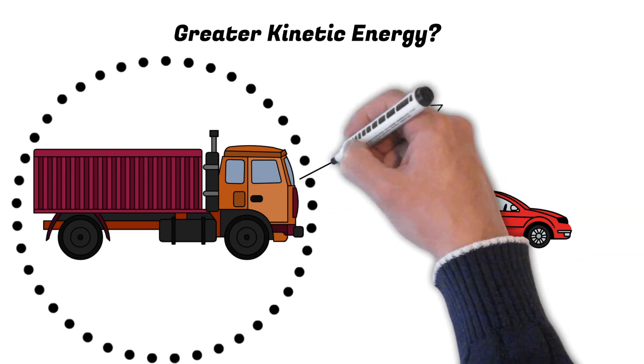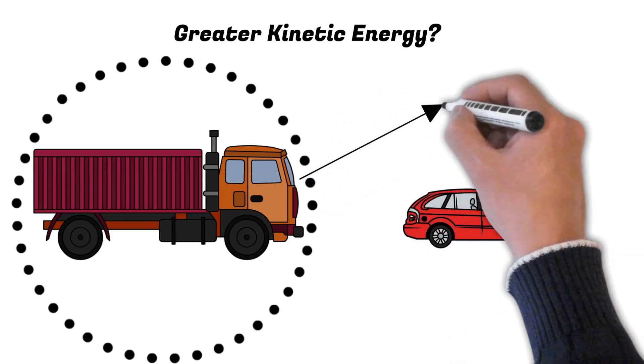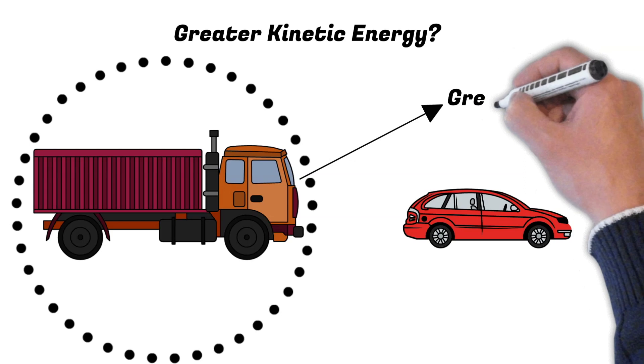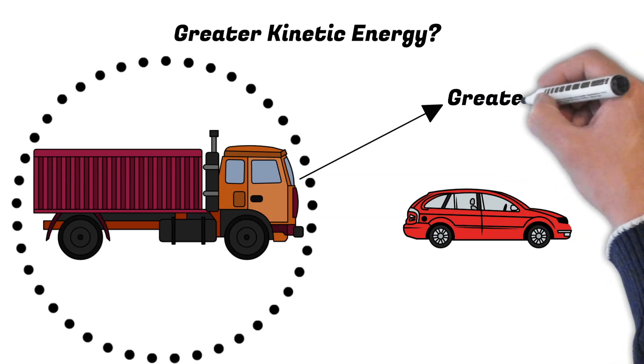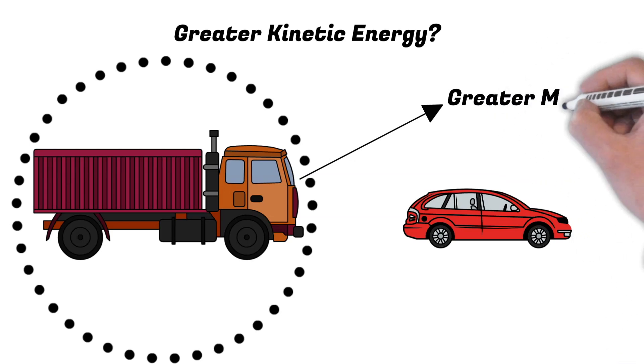The answer to this question is the truck because it has a greater mass. And for my kiddos that understand the equation one half m v squared, you will know that if it has a greater mass then it's going to have a greater kinetic energy.